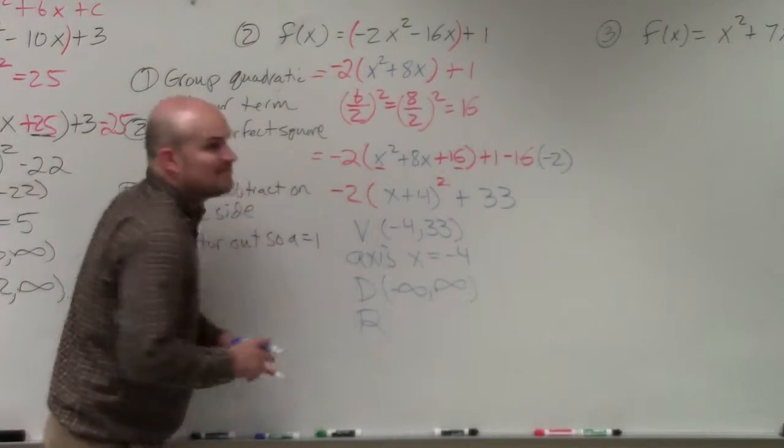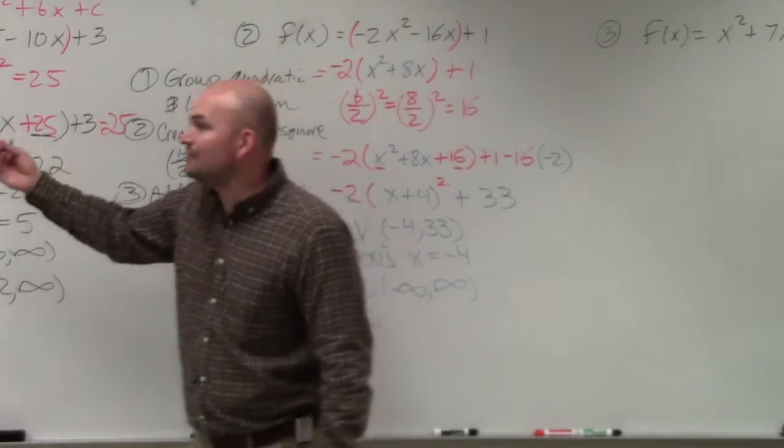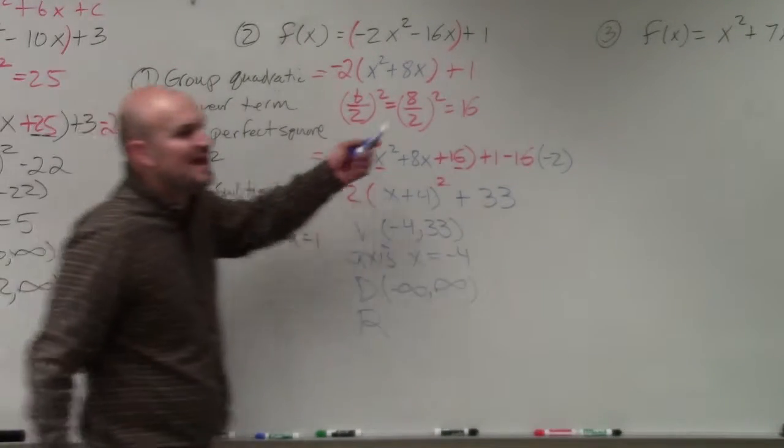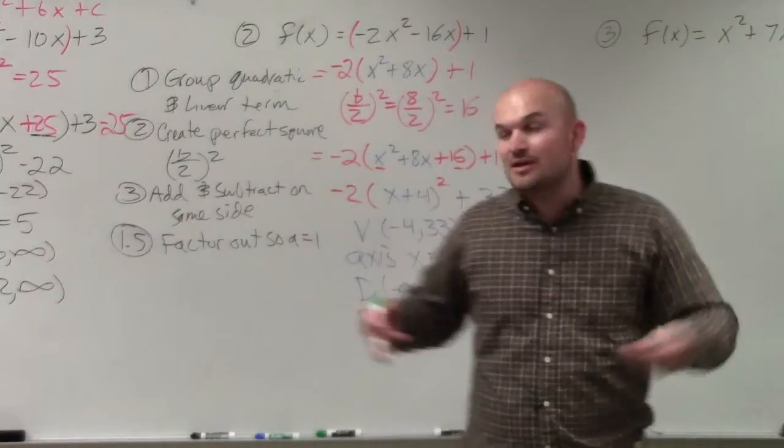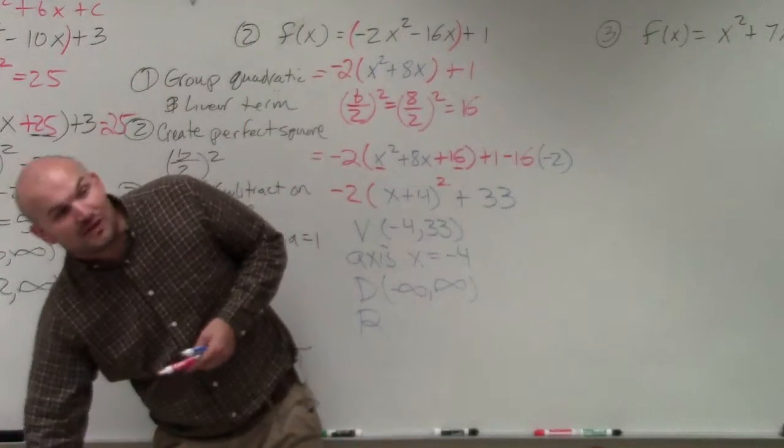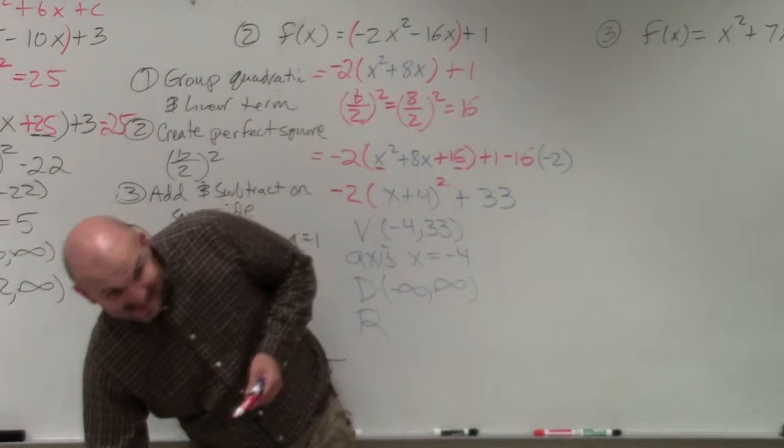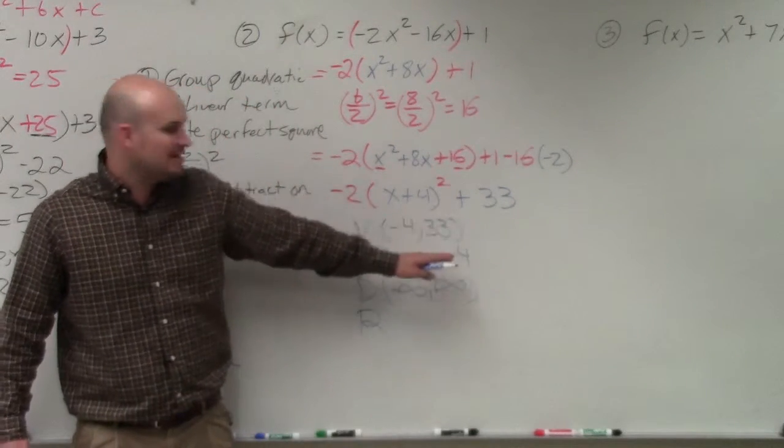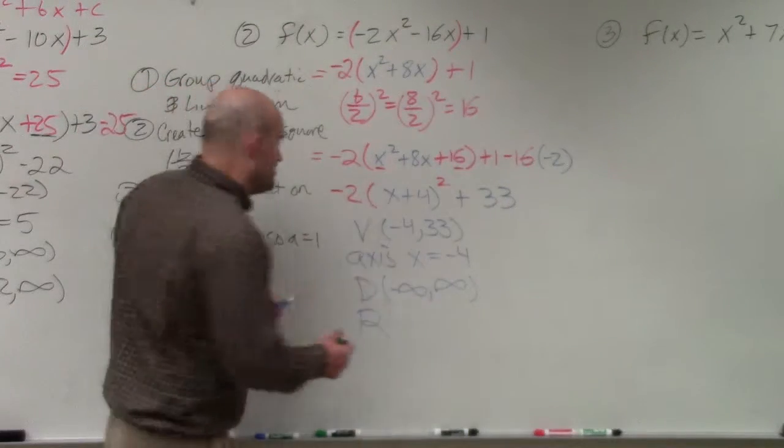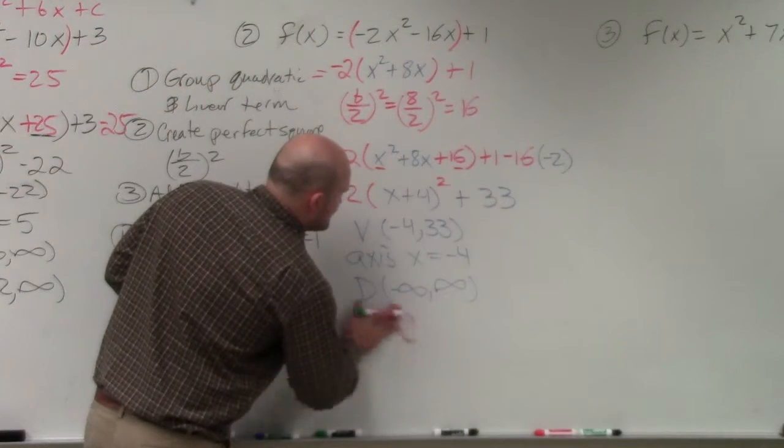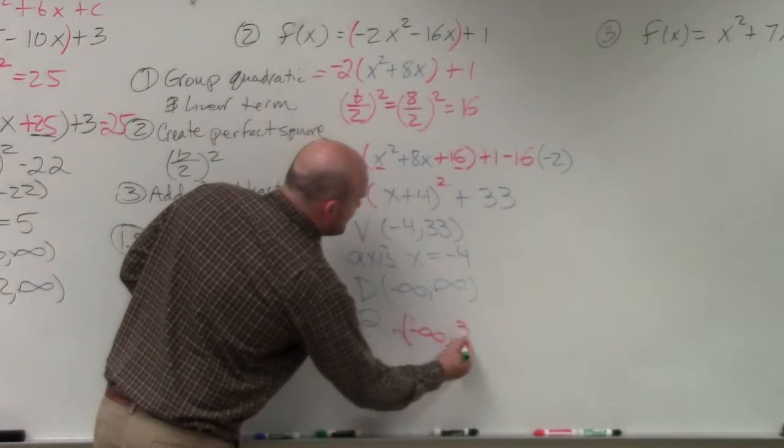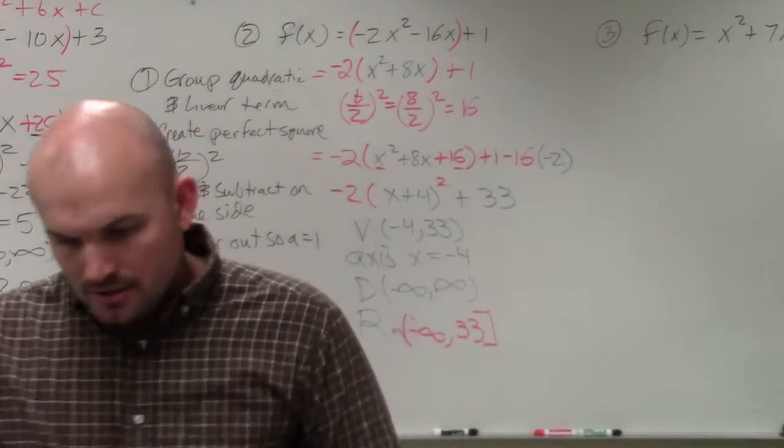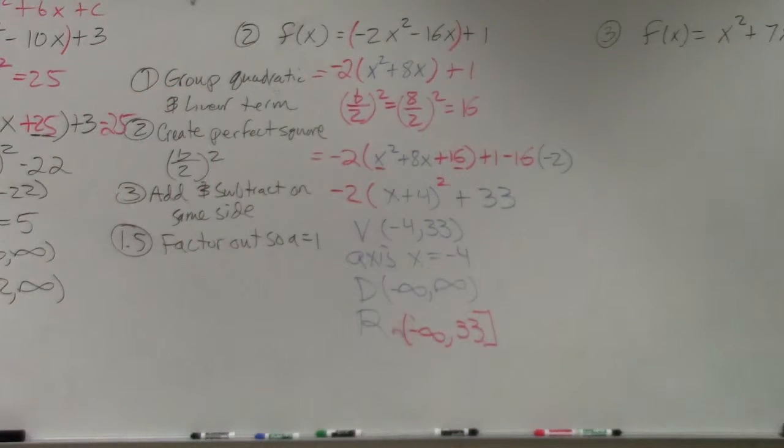Now, the range is, remember, ladies and gentlemen, if this is negative, what does that tell you about the end behavior? Remember, when it's negative on the outside, that reflects it over the x-axis? So if my graph is facing down, the lowest value is going to be negative infinity. And that's going to go all the way up to how high did this vertex, how high did I move my vertex up to? 33. So my range, oops, that's not included, is negative infinity to 33 included. All right. So we didn't have.